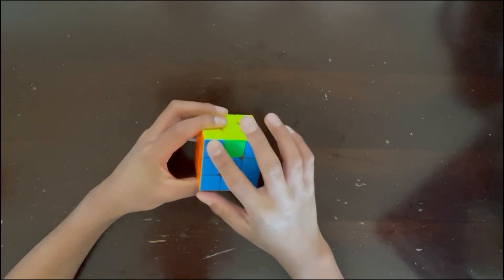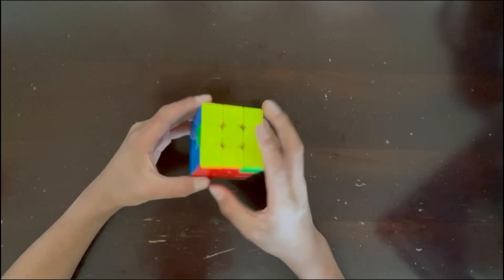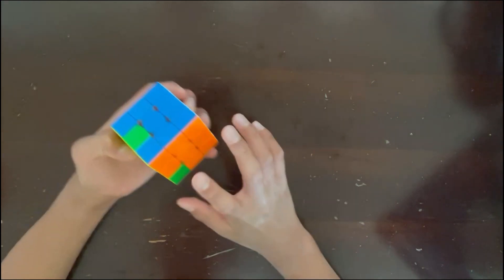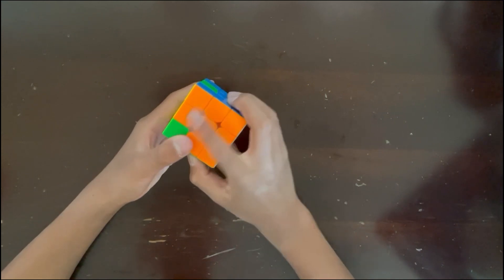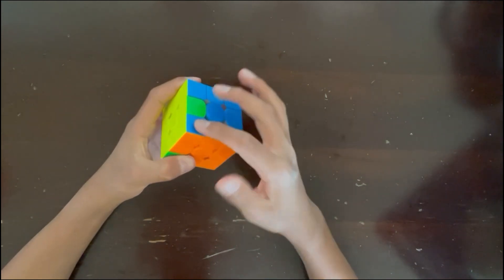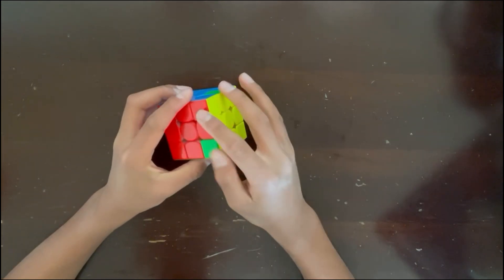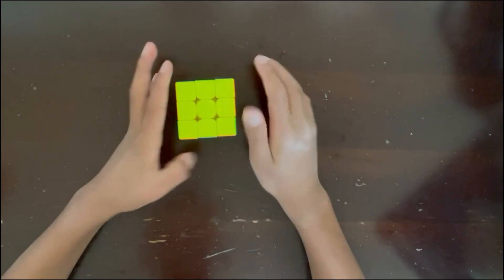So you look for the headlights, and then next to the headlights, what you have to see is on the left right here and on the right right here. If there's the corner and the edge right next to the headlights here, and they are the same color like this, and on the other side they're also the same color, that means that you have the T-perm.